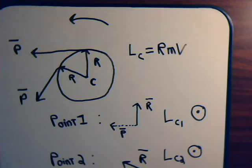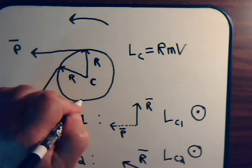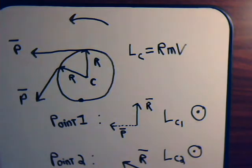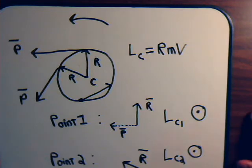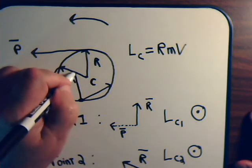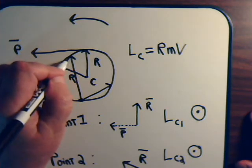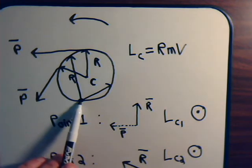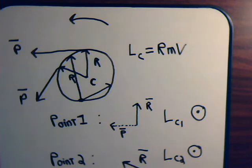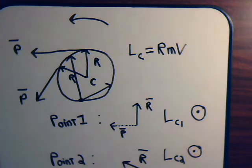But suppose we had considered not the center of the circle, but a point off to the side. Obviously this is a very different situation. If we're at one position on the circle, the position vector R has one magnitude; at another position, R has an entirely different magnitude. So the angular momentum of the circle considered from an off-center point is not conserved. When we ask what is the angular momentum and whether it is conserved, we must specify what point in the system we're working with.